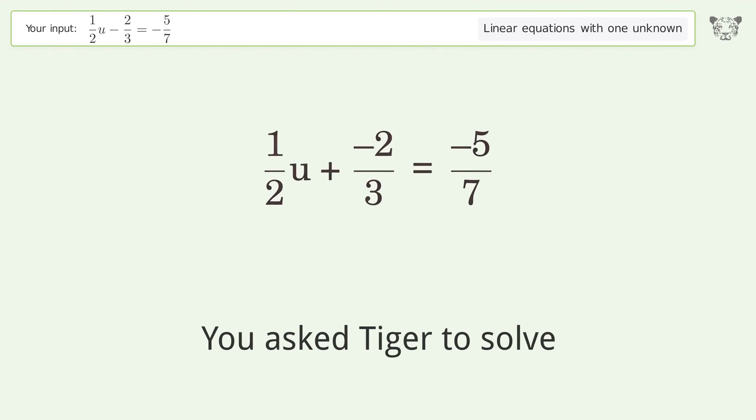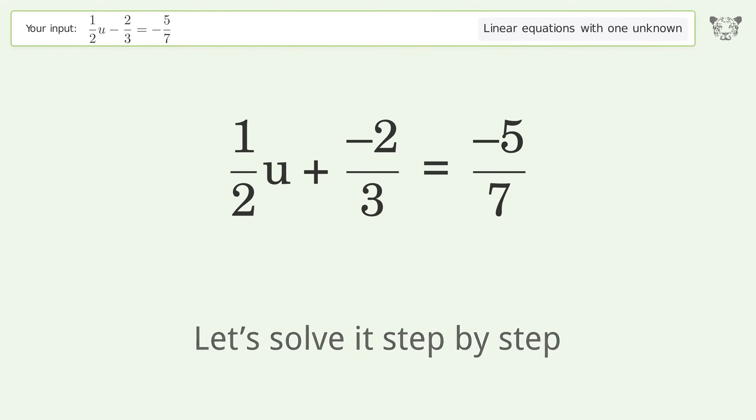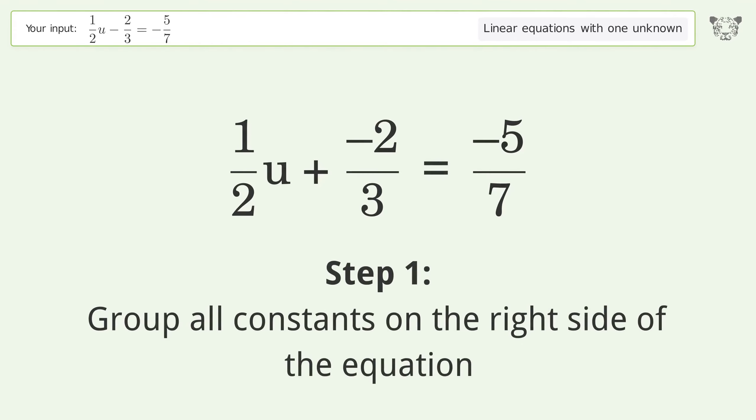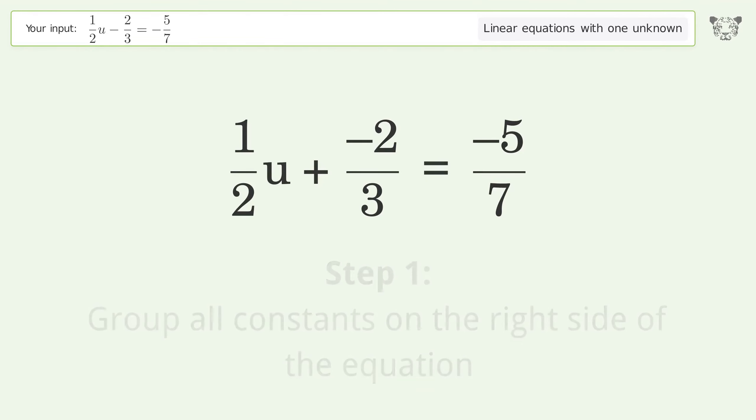You ask Tiger to solve this, dealing with linear equations with one unknown. The final result is u equals negative 2 over 21. Let's solve it step by step. Group all constants on the right side of the equation. Add 2 over 3 to both sides.